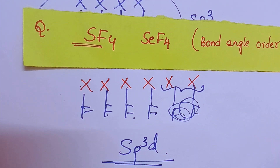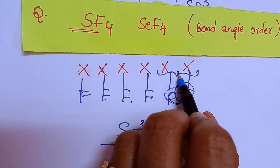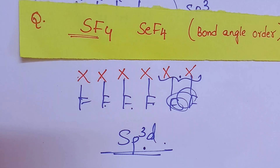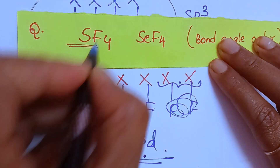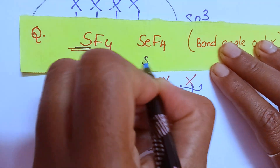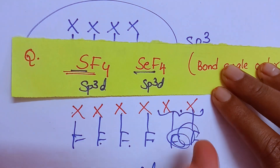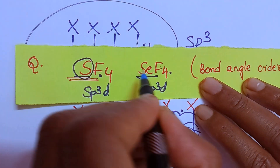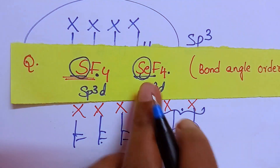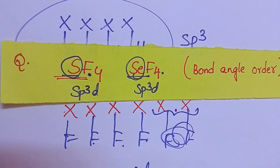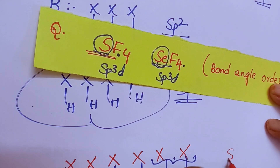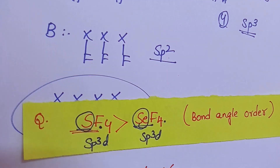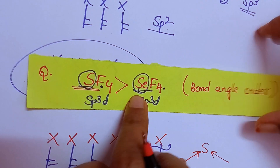You must learn hybridization. SP3D hybridization with one lone pair means it is not perfect geometry — distortion will be there, repulsion will be there. The central atom is different but hybridization is the same, bonded atoms are the same, everything is the same. In this case, as central atom electronegativity increases, bond angle increases — the more electronegative central atom draws electrons closer, creating more repulsion. So SF4 has a greater bond angle than SeF4.